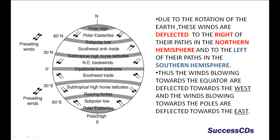Due to the rotation of the earth, these winds are deflected to the right of their paths in the northern hemisphere and to the left of their paths in the southern hemisphere. Thus, the winds blowing towards the equator are deflected towards the west and the winds blowing towards the poles are deflected towards the east.